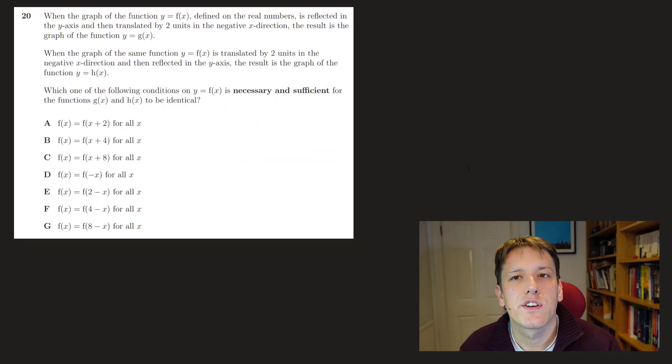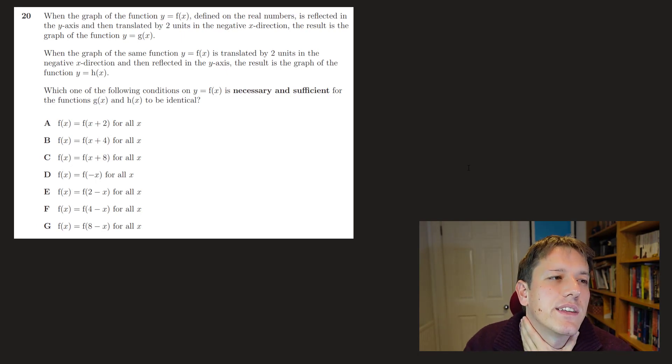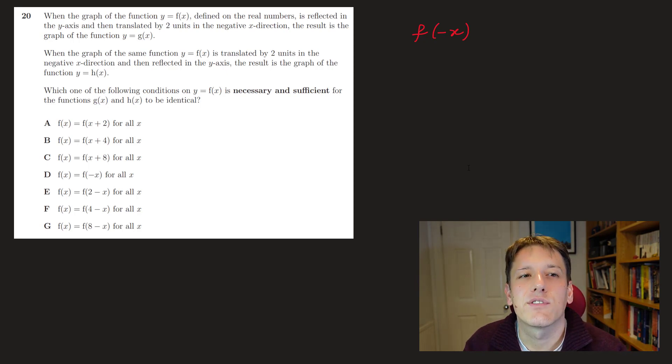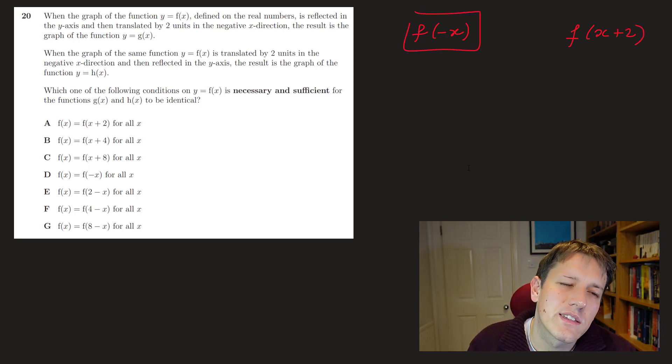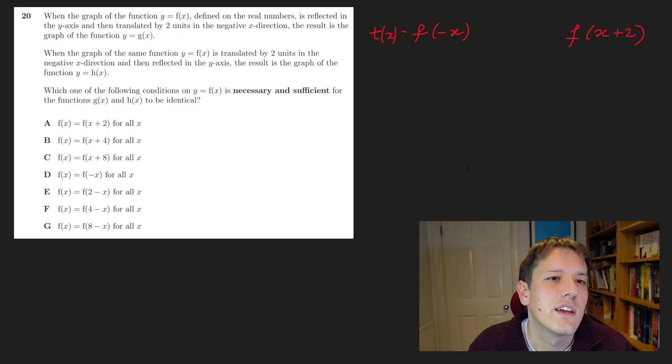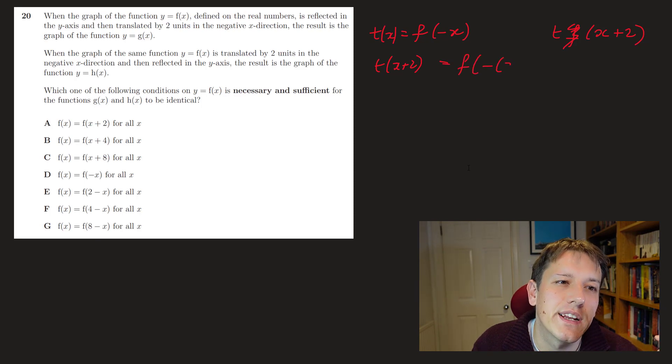And here in the final question, it says when the graph of the function y equals f of x defined on the real numbers is reflected in the y-axis, and then translated by 2 units in the negative x direction, we get the function g of x, so let's deal with that, and write down the function g of x, so if I reflect in the y-axis, I would get f of minus x, we replace x with minus x, and if I translate by 2 units in the negative x direction, I get, the basic transformation is that I do f of x plus 2. So what does that mean here? Because I've already done this one, I can't use g, let's just call this, let's call it t of x. So what I want to do is to do t of x plus 2, to shift this to the left by 2 units, so this would be f of minus x plus 2, and I've got to keep the x plus 2 in brackets.